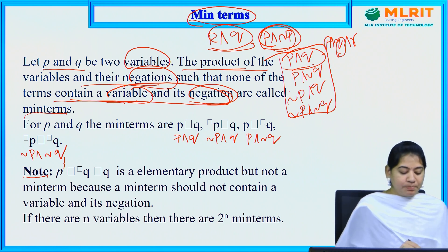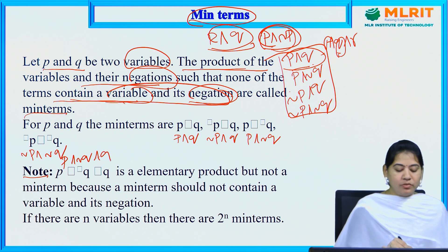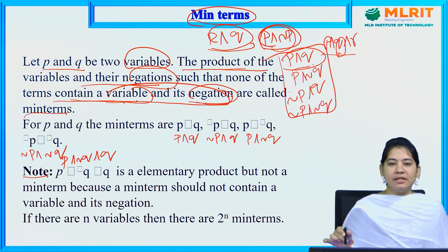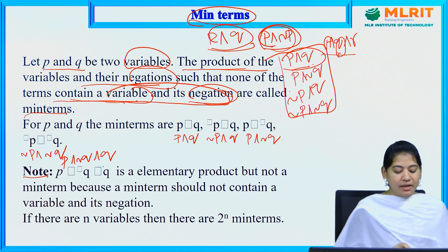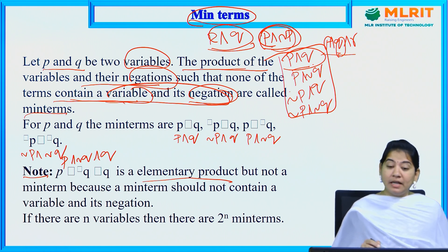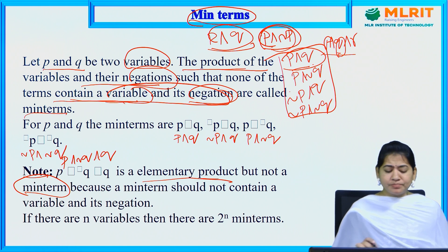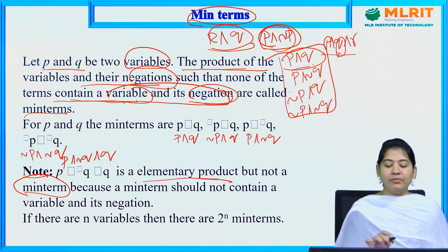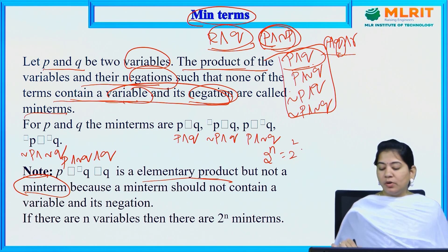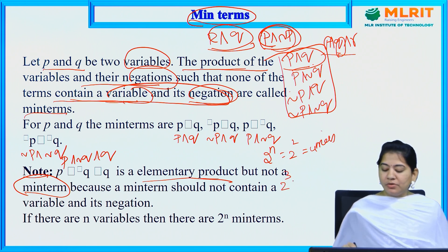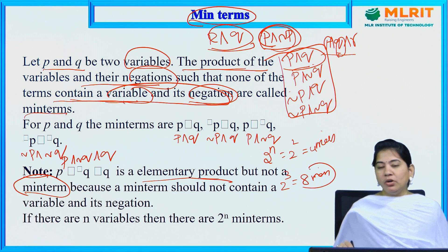Note: the expression P and ¬Q and Q is an elementary product, but it is not a min term, because as per the definition of min terms, a variable and its negation are not accepted. If there are n variables, then there are 2^n min terms. For 2 variables, 2^2 = 4 min terms. For 3 variables, 8 min terms total — you can have 8 or fewer, but should not exceed 8.